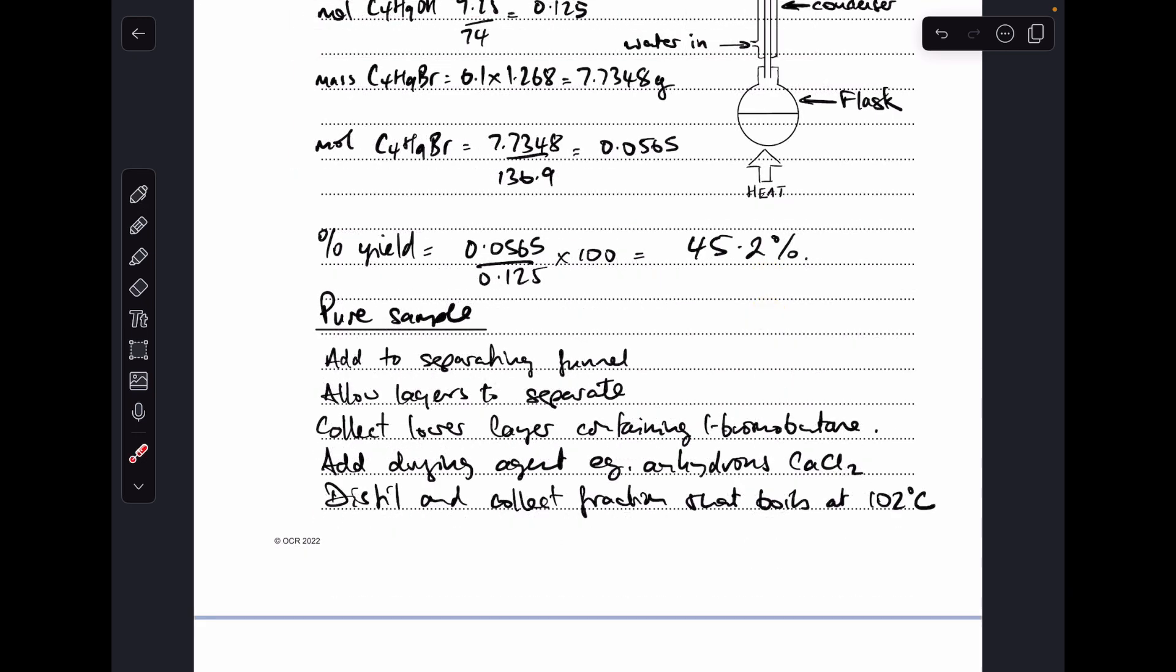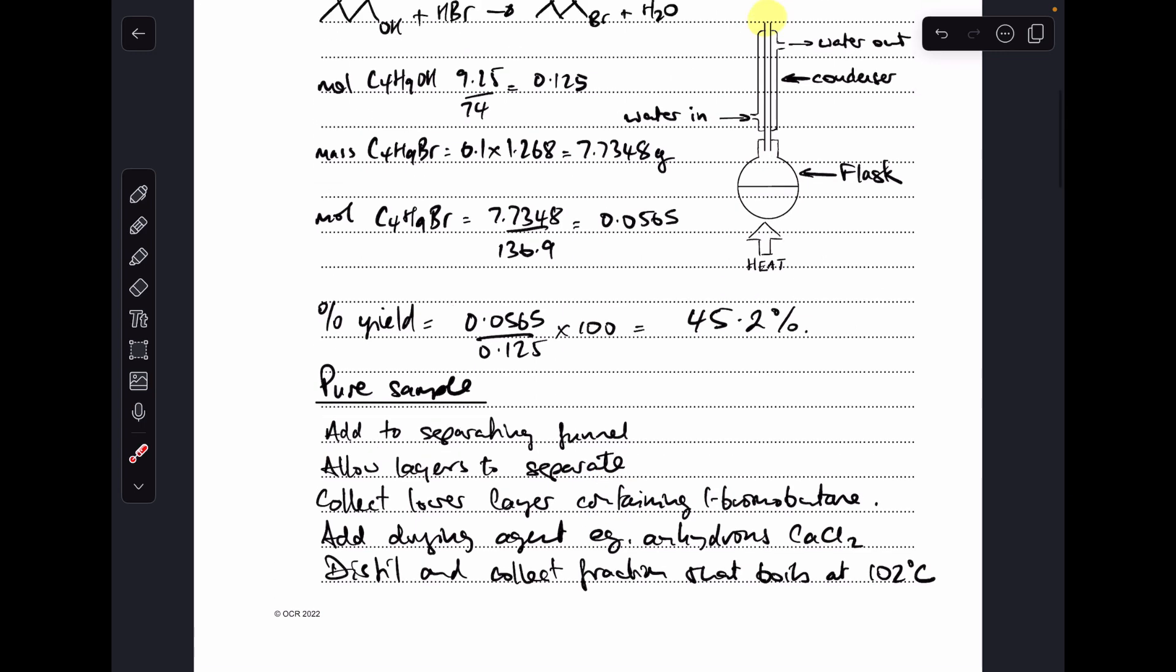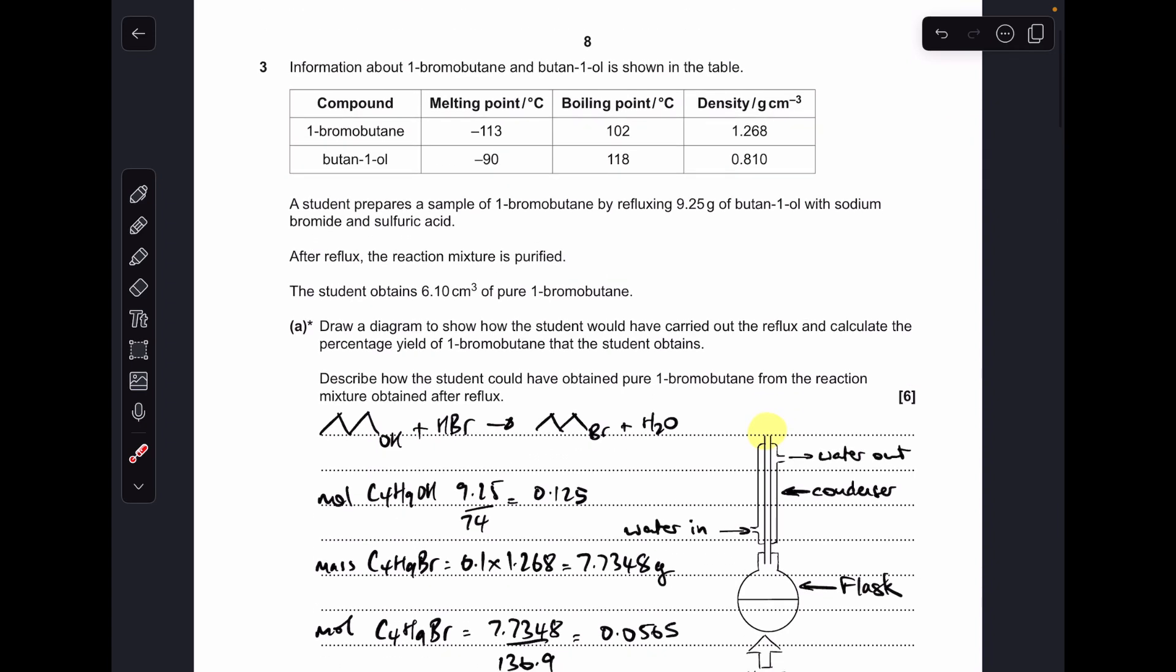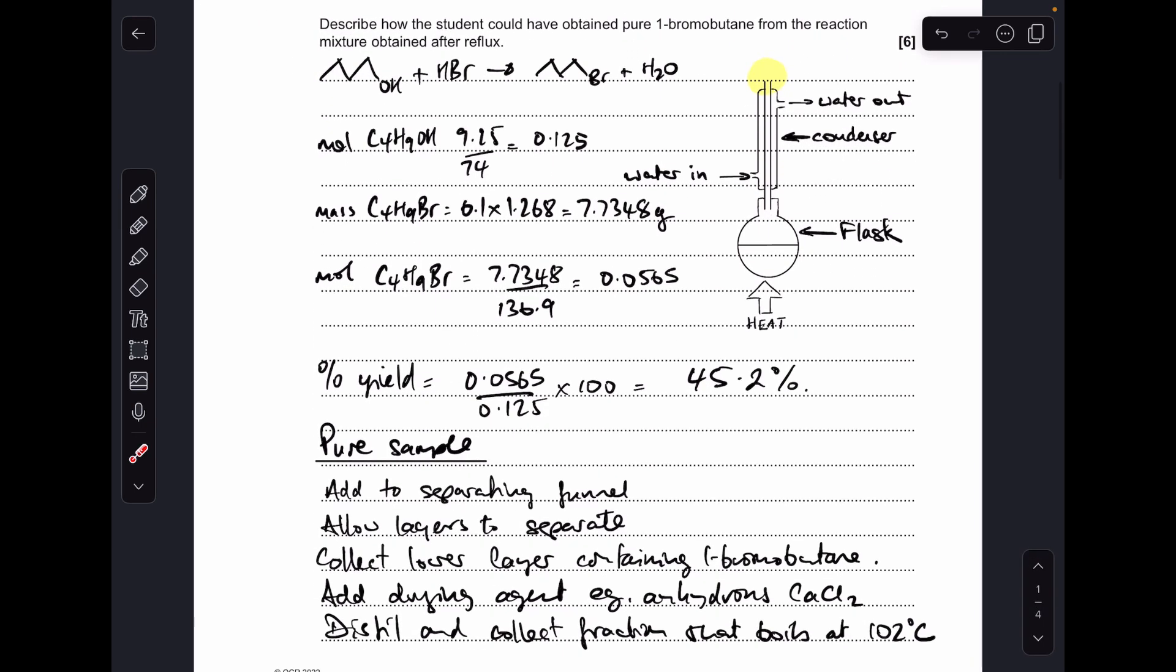And then we'll just finish off with the purification part. So they're going to add the mixture, the reaction mixture to a separating funnel. They're going to allow the layers to separate out. The density information was given in the table. So just look at that. So you can see 1-bromobutane has got a higher density so that's going to be the lower layer. So they're going to collect the lower layer that contains that 1-bromobutane.